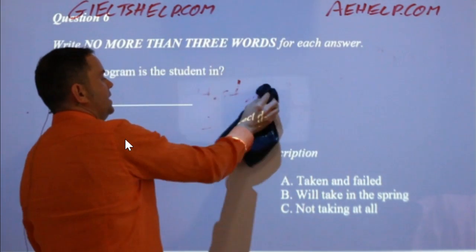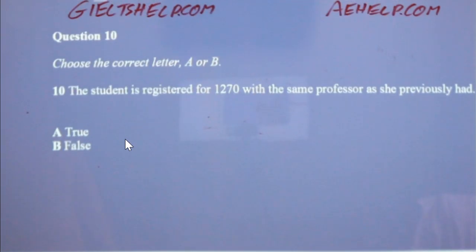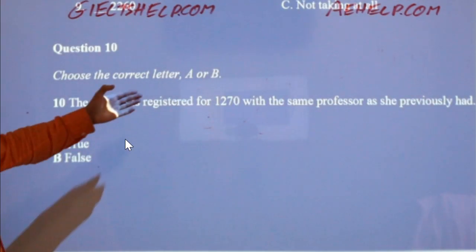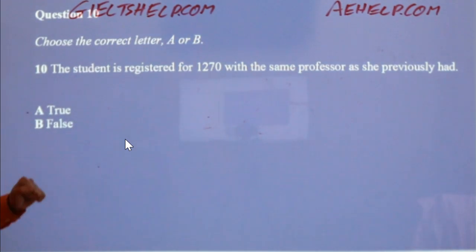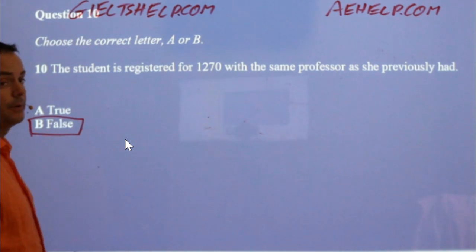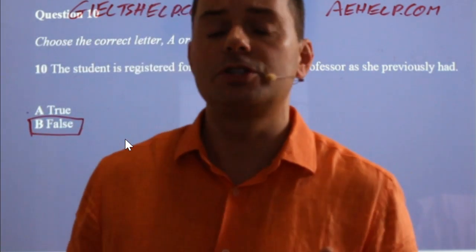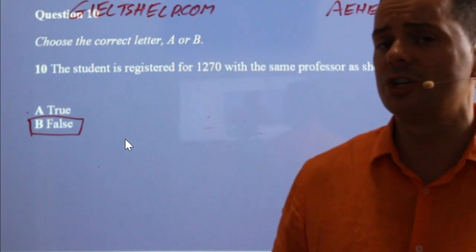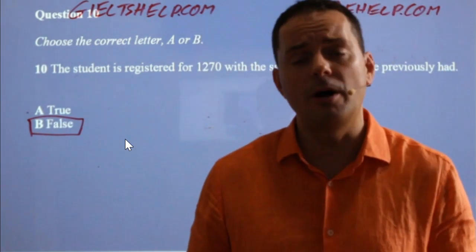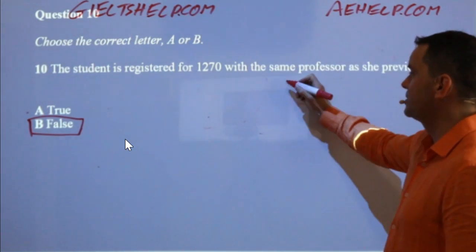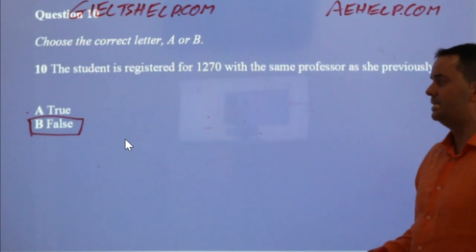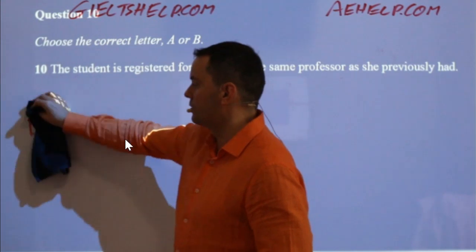One more question for section 1 — choose the correct letter, A or B. The student is registered for 1270 with the same professor as she previously had. Is it true or is it false? Prashil, Abhishek, you're right — it's false. You should get this from the inference, from the overall audio. The student says she failed 1270 because the teacher's teaching style did not match her learning style. And the administrator says no problem, I put you in Professor Hennessy's class — a different professor. So the student is not with the same professor. The correct answer was B.